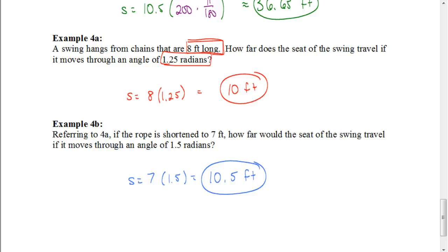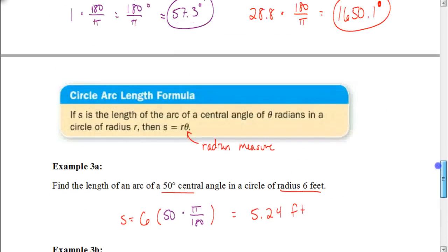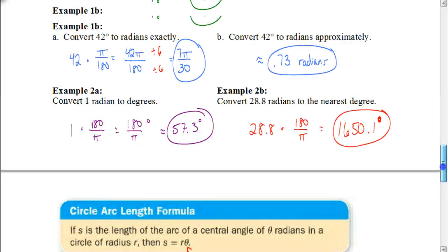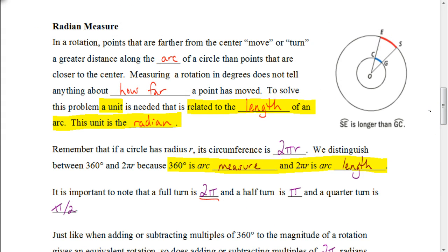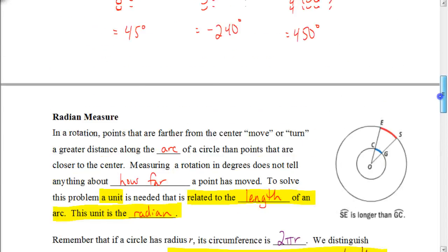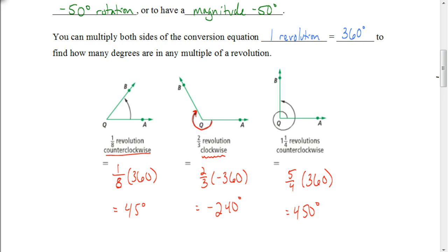There you have it. A couple things to recall from this lesson: remember the arc length formula S = rθ for circles that don't have a radius of 1. Remember how to convert from degrees to radians and from radians to degrees. Remember that we can figure out degrees based on the revolution fraction and direction — clockwise is a negative rotation. That covers our notes for Lesson 4.1, so you should be able to do your assignment. Good luck.